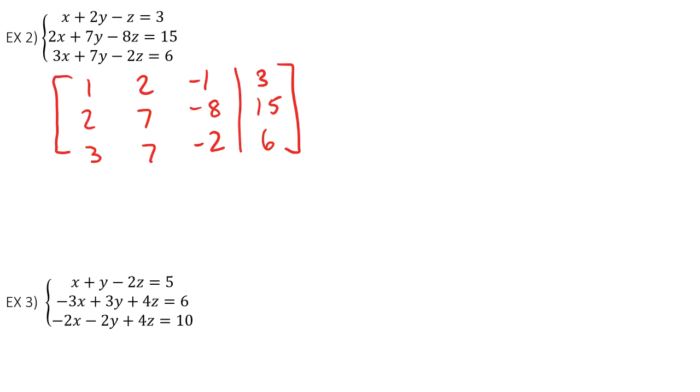So going back over to the page, the matrix it gave us was 1, 0, 0, 3, 0, 1, 0, negative 1, 0, 0, 1, 2. So our answer is 3, negative 1, 2.